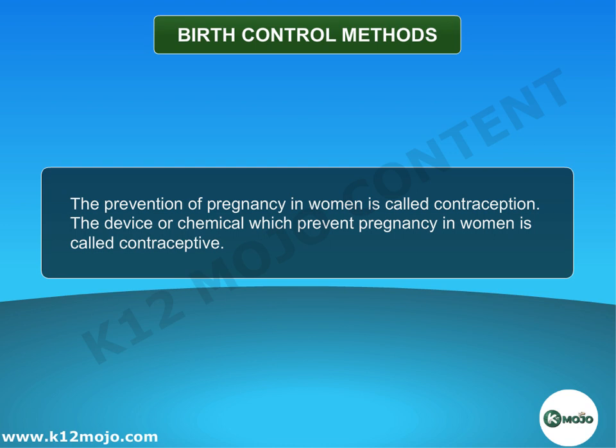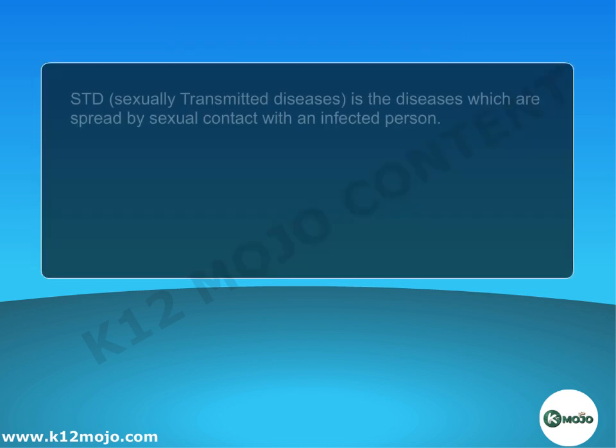The prevention of pregnancy in women is called contraception. The device or chemical which prevents pregnancy in women is called a contraceptive. Sexually transmitted diseases, or STDs, are diseases which are spread by sexual contact with an infected person.